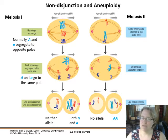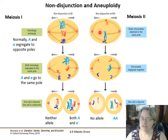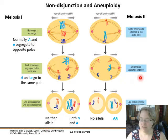The other version is meiosis II non-disjunction, where the homologous chromosomes have been separated correctly, but then in meiosis II there's a non-disjunction in the sister chromatids — the sister chromatids fail to separate. So one cell is just missing an allele, and the other has two copies of the chromosomes. One cell disomic, the other nullosomic — different terms describe this depending on which textbook you're using.